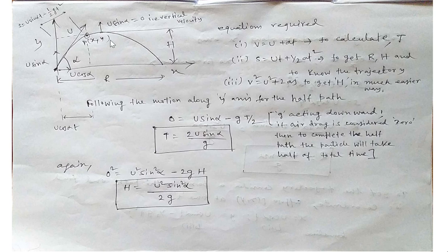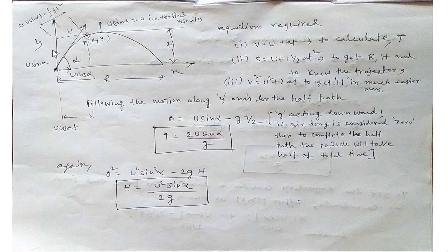To study the kinematics of projectile motion, suppose a particle is thrown at angle α with initial velocity u. Resolving the velocity components along x and y: along x it is u·cos α, and along y it is u·sin α. If we neglect air drag and all resistances, the only force acting is the weight of the particle, which acts vertically downward, causing a retardation of magnitude g in the vertical direction. There is no force along x, so u·cos α remains constant throughout the motion.